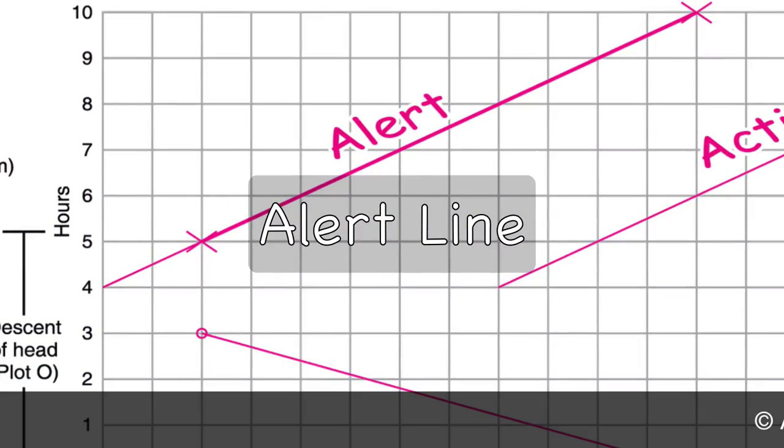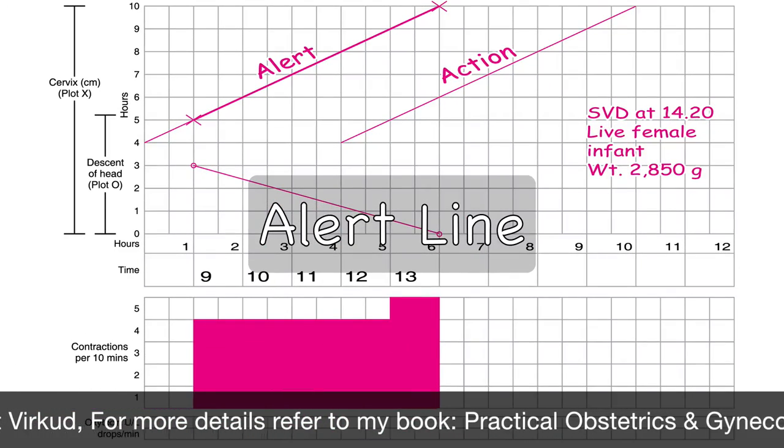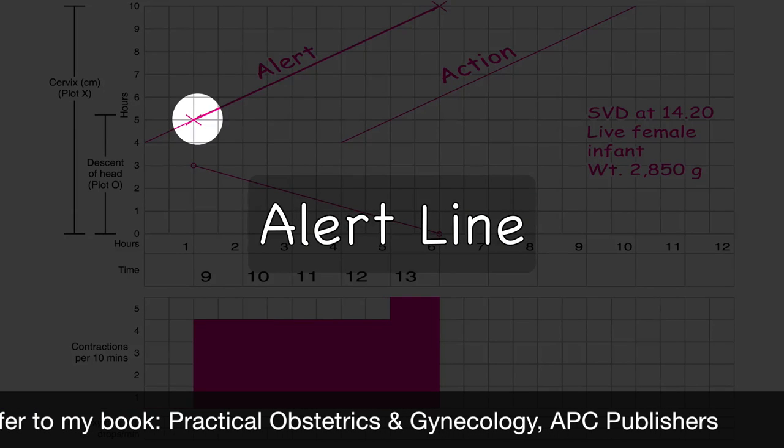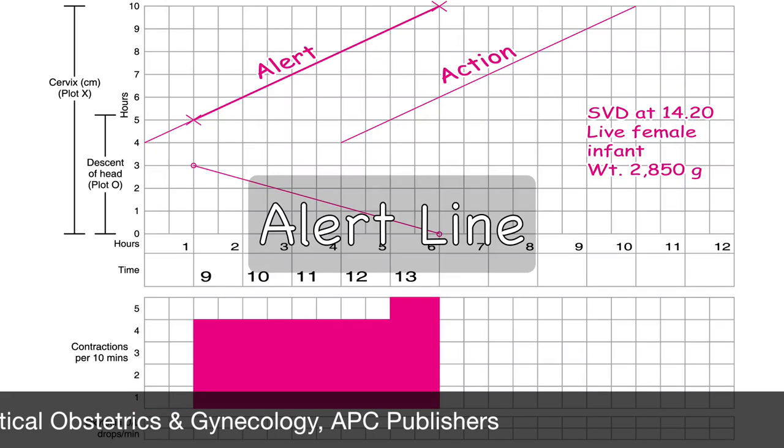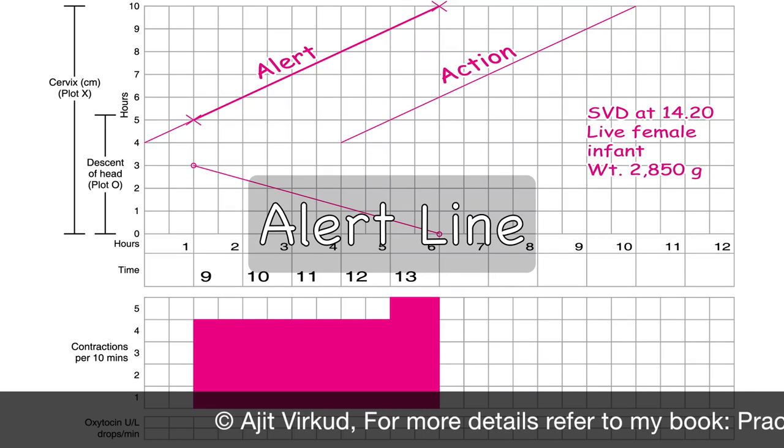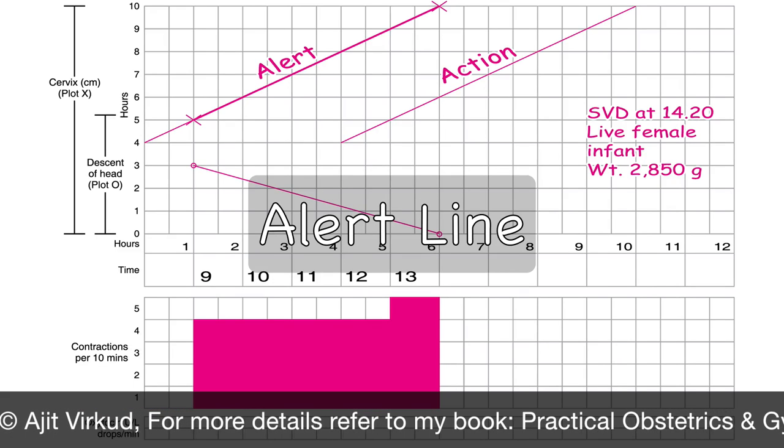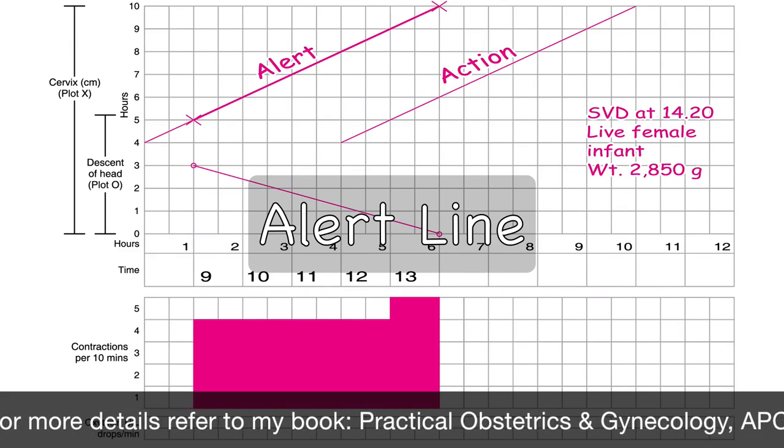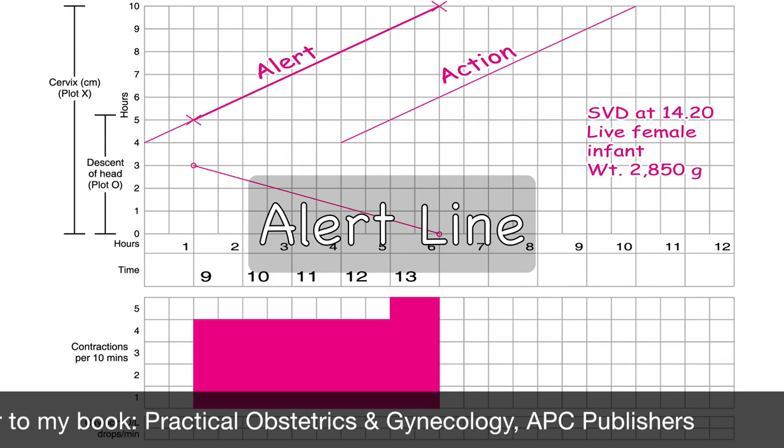The alert line begins at four centimeters dilatation and extends to a point of expected full dilatation, that is 10 centimeters. It represents a rate of dilatation of one centimeter per hour. The first dilatation reading is always plotted on the alert line. When labor progress is normal, plotting of dilatation remains on the alert line or to its left. If it moves to the right of the line, labor may be prolonged. In this situation, if facilities for assessment of the cause and its prompt correction are not available, the woman should be transferred to a tertiary care facility. The alert line is also known as the health facility line because as long as labor progress remains inside this line, women can be kept in the primary care center or hospital.